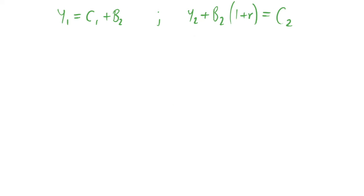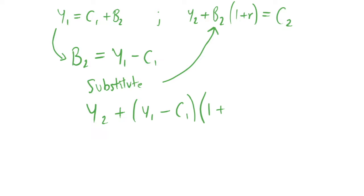So let's take those two previous equations and put them at the top of the screen. Now what I'm going to do is I'm going to rearrange this equation such that we isolate B2 on the left hand side so B2 equals Y1 minus C1 and then I'm going to substitute that into this equation but not for Y2, I'm going to substitute it into B2. Okay, so what will that do? That gives us Y2 plus Y1 minus C1 in brackets times 1 plus R and that all is equal to C2.